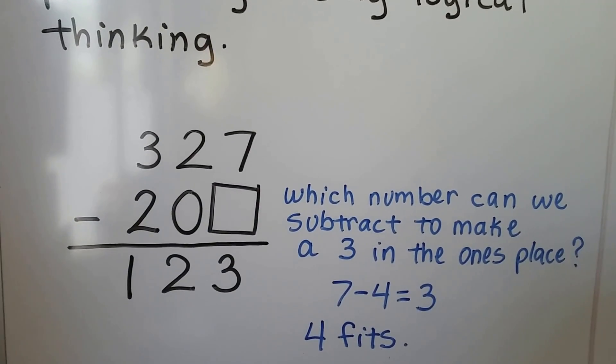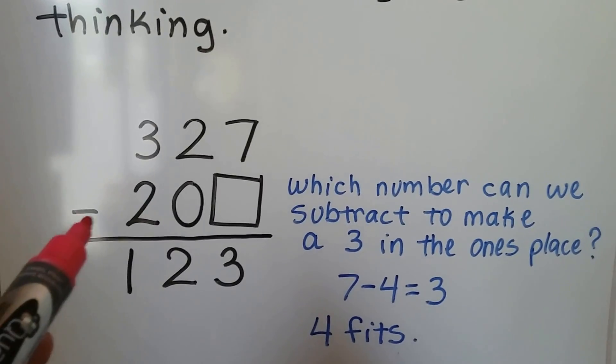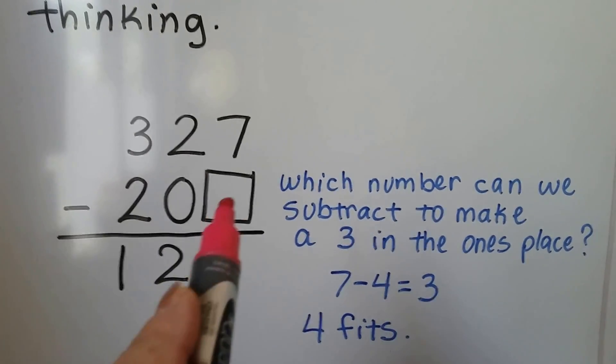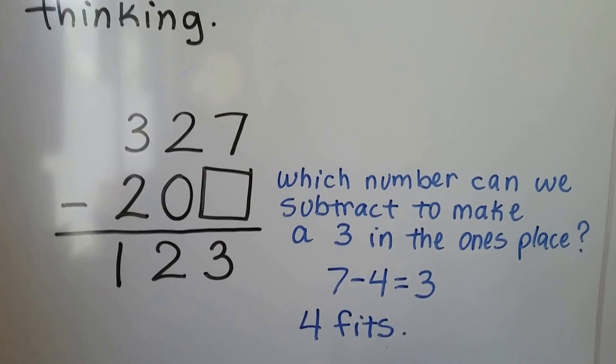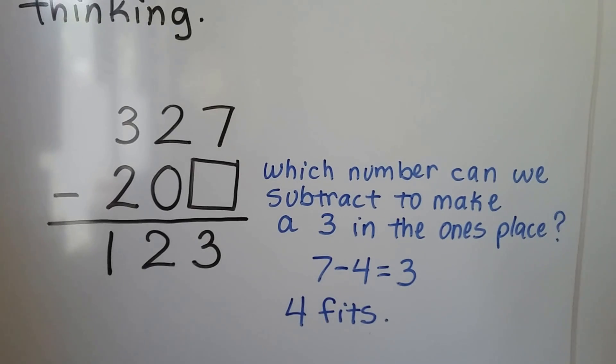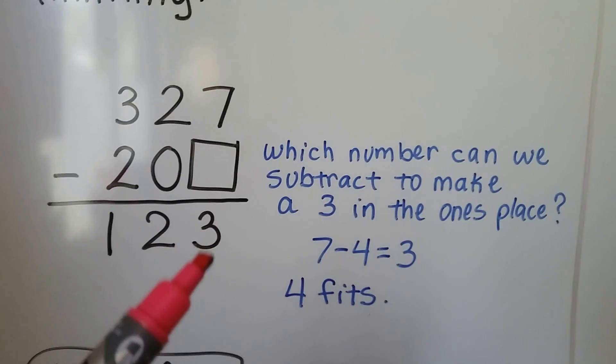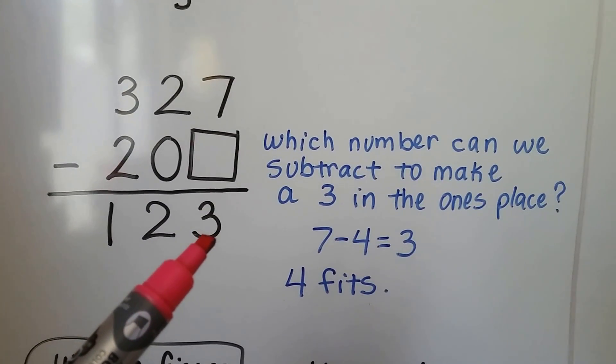Let's take a look at this problem. We have 327 and we're subtracting 200 and then there's a missing digit. It gives us the answer of 123, but we have to figure out what that digit is. So we think, which number can we subtract from 7 that's going to put a 3 in the ones place?